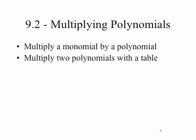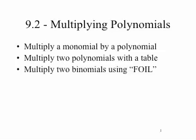The second is to multiply two polynomials together using a table. This is useful for multiplying polynomials, no matter how many terms they have. The third — and we'll use this way a lot as we move forward into Chapters 9 and 10 — is to multiply two binomials together using a method called FOIL. FOIL is an acronym that stands for a set of steps. Towards the end of this presentation, you'll learn what the FOIL acronym stands for.